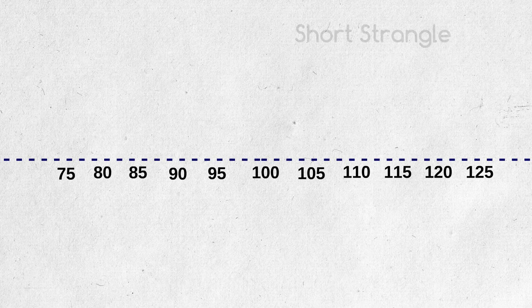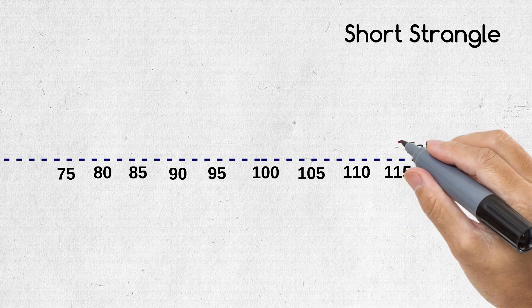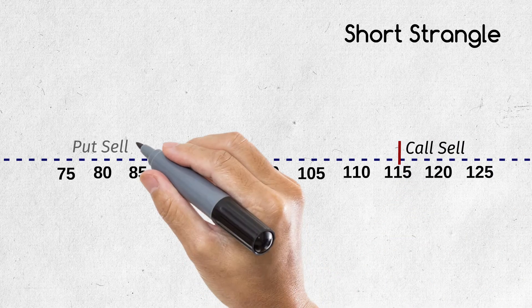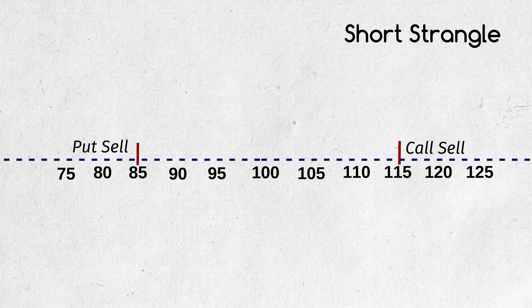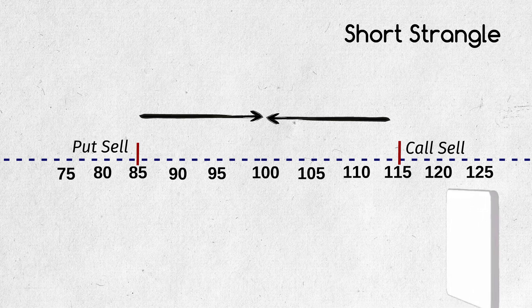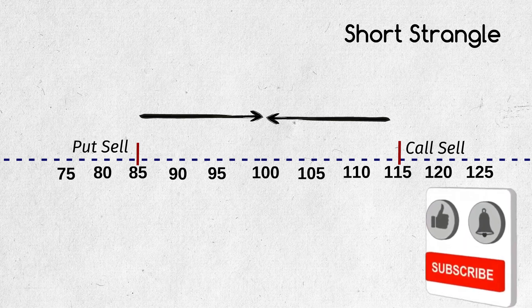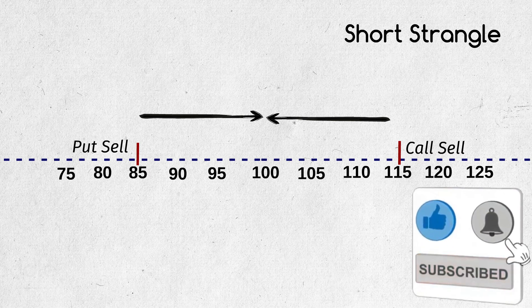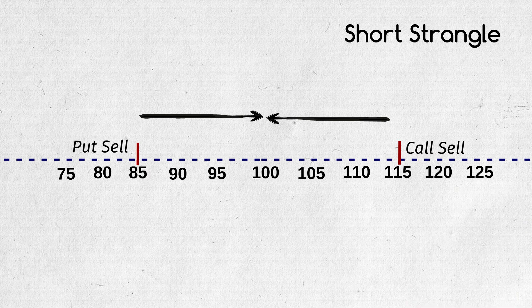In short strangle, we sold one out of the money call option and one out of the money put option. If at expiry the price stays in the range we thought, both contracts expire worthless and so we will profit with both the premiums. In short strangle strategy, we get low premium as both are out of the money options, but the range we get will be more, so our safety will be more.